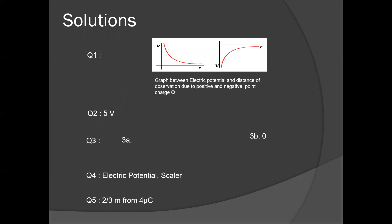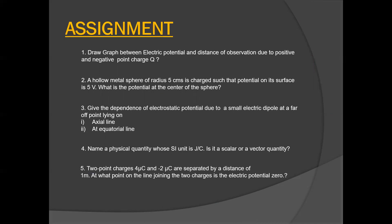Question 3: Give the dependence of electric potential due to a small electric dipole at a far point lying on: first, the axial line; second, the equatorial line. The answer: on the axial line it is kp/(x²−l²), where x is the distance of observation and 2l is the dipole length. On the equatorial line, it comes out to zero. Question 4: Name a physical quantity whose SI unit is Joule per Coulomb. Is it a scalar or vector quantity? Answer: Joule per Coulomb means it is electric potential, and it is a scalar quantity.